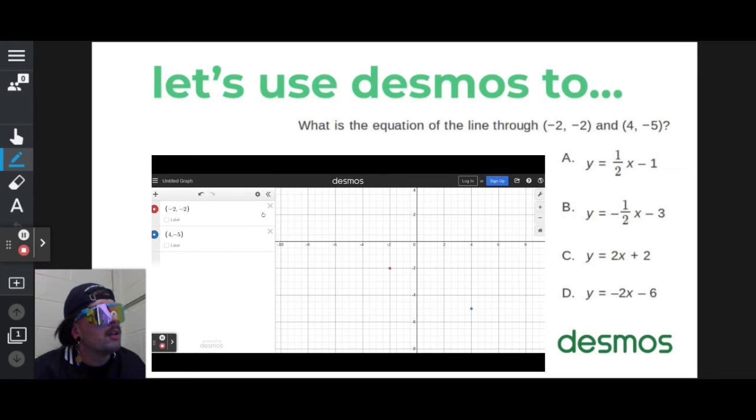But I need to find a line that goes through those two points. So I'm going to start typing my options in. If I type out A, it's y equals 1 slash 2, move over before you put the x, minus 1.